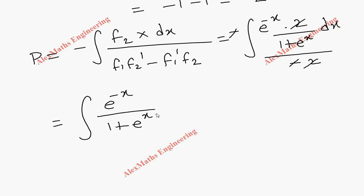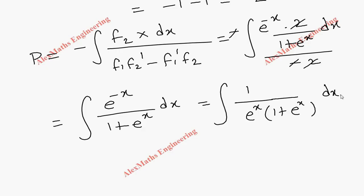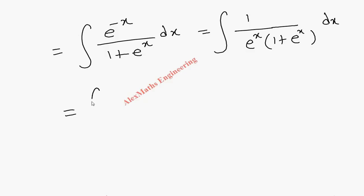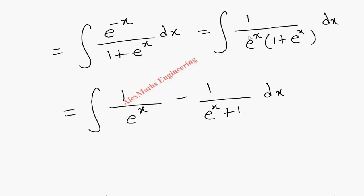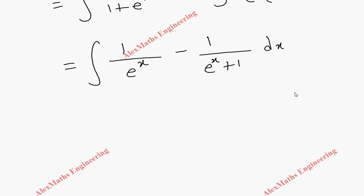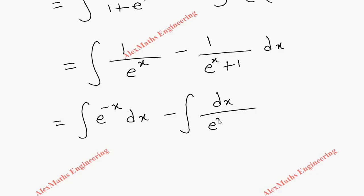We bring e^(-x) to the denominator as 1/eˣ, giving ∫[1 / (eˣ·(1 + eˣ))] dx. Rearranging using partial fractions, this becomes 1/eˣ - 1/(eˣ + 1). After applying the partial fraction rule and finding A and B, we integrate: ∫e^(-x) dx and ∫dx/(eˣ + 1).